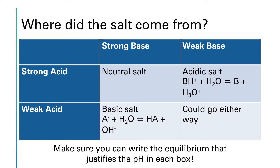Here's how we're going to make that pH range prediction. We have to look at where the salt came from. If it came from a strong acid reacting with a strong base — remember the base gives us the cation and the acid gives us the anion — if we reverse engineer them and come up with a strong acid and strong base, it will be a neutral salt. They cancel each other out.